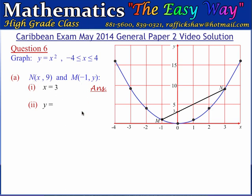At the point M, the x-coordinate is negative 1 and we are trying to find the y-coordinate. Using the formula y equals x squared, y would be equal to negative 1 squared, and negative 1 squared is positive 1. Therefore y equals 1. The coordinates of M are (-1, 1) and the coordinates of N are (3, 9).